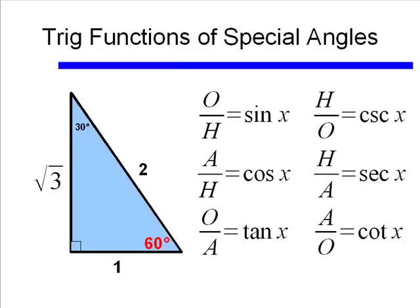We'll begin with looking at 60 degrees. In relation to 60 degrees, let's think about what our sides are. The hypotenuse is easy — that's the longest side, of length 2. The opposite side is square root of 3, and the adjacent side is length 1.